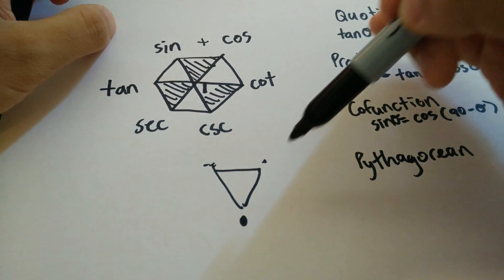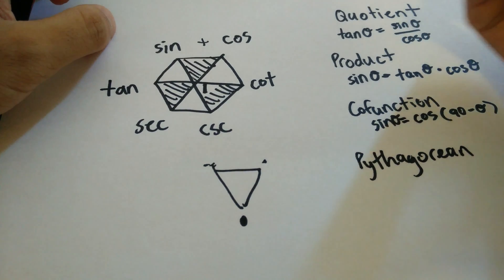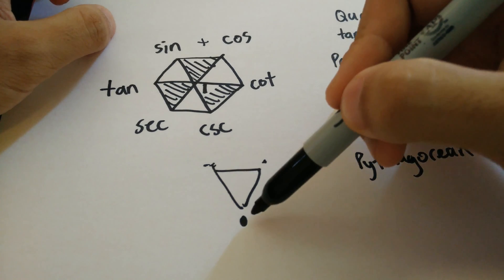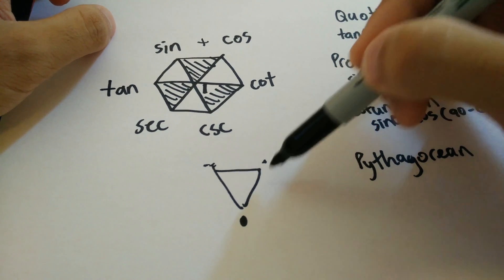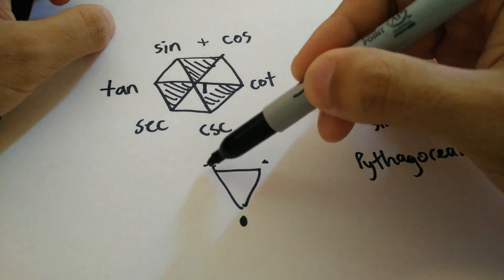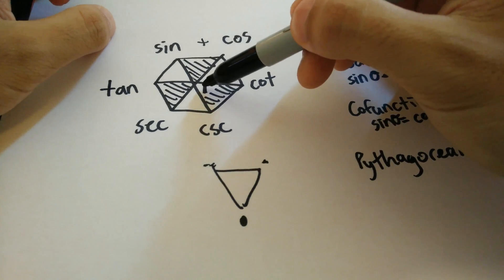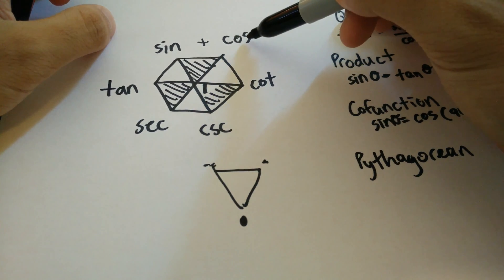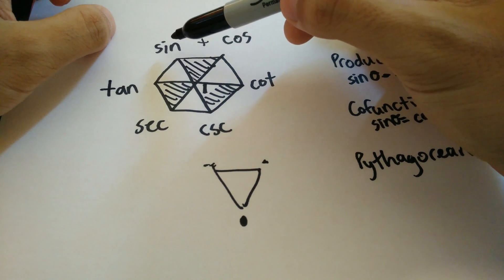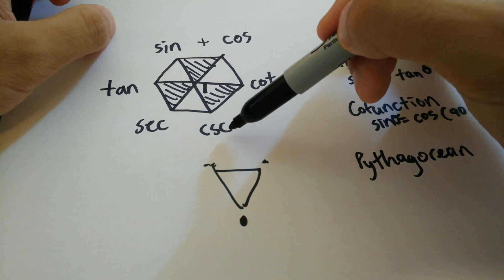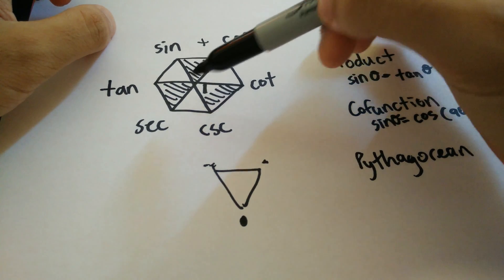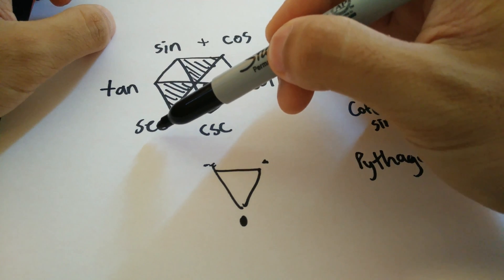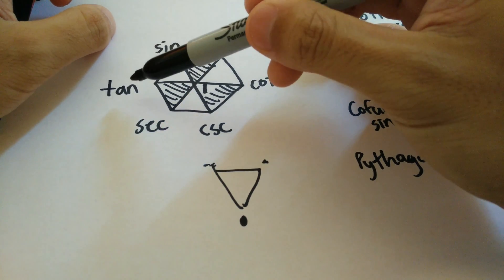Now because adding and subtraction are opposites, what you could do is also use the bottom subtracting one of the top ones to get the other top one. For example, 1 minus cosine squared theta is equal to sine squared theta. Cosecant minus cotangent squared theta is equal to 1. Secant squared theta minus 1 is equal to tangent squared theta.